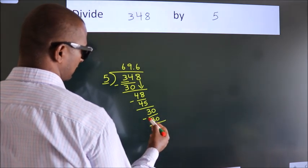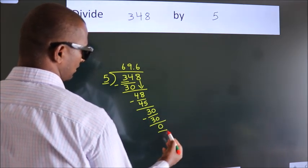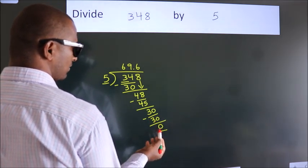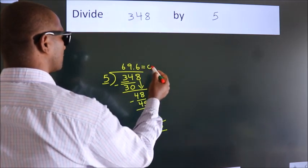Now, we subtract. We get 0. We got remainder 0. So this is our quotient.